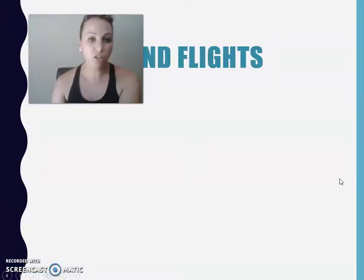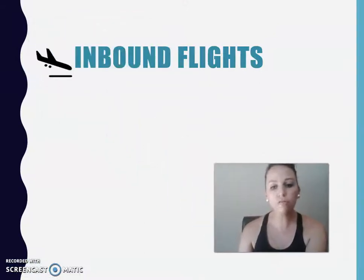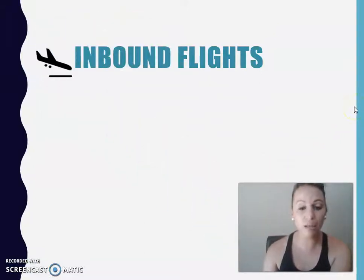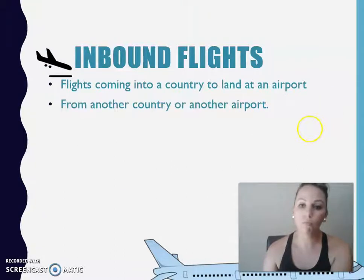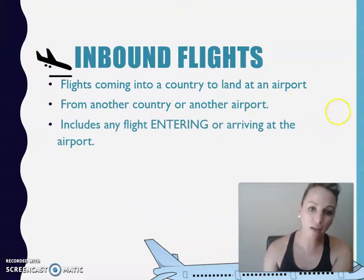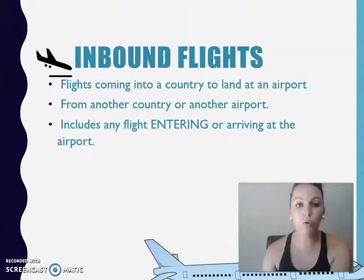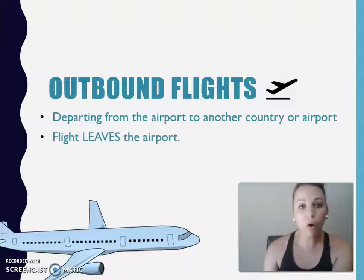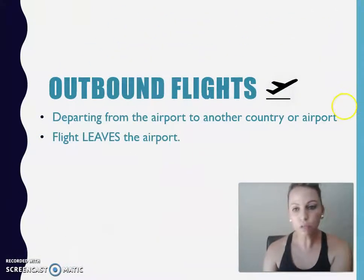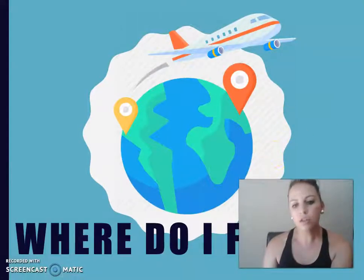Now we're going to look at direction. Our first type of flight regarding direction is inbound flights — this is when any flight enters a country, arriving at an airport. It's a flight from one country to another country, entering or arriving. Then we have outbound flights, where flights depart from South Africa and leave the airport to go somewhere else.